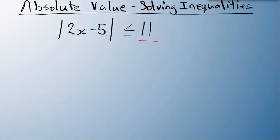So I can rewrite this as negative 11 is less than or equal to 2x minus 5, and that is all less than or equal to 11.